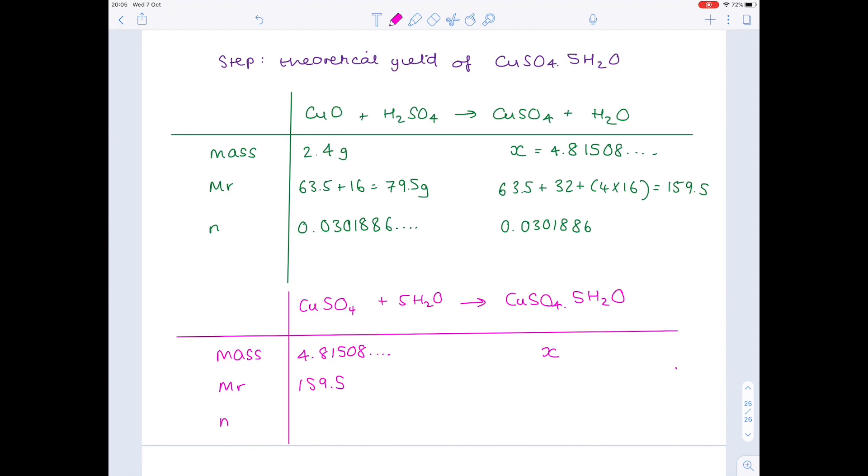Let's find out our number of moles by doing mass divided by Mr, so 4.81508 divided by 159.5 to get 0.0301886. Check your mole connection—it's one to one again, so you can just copy that number across.